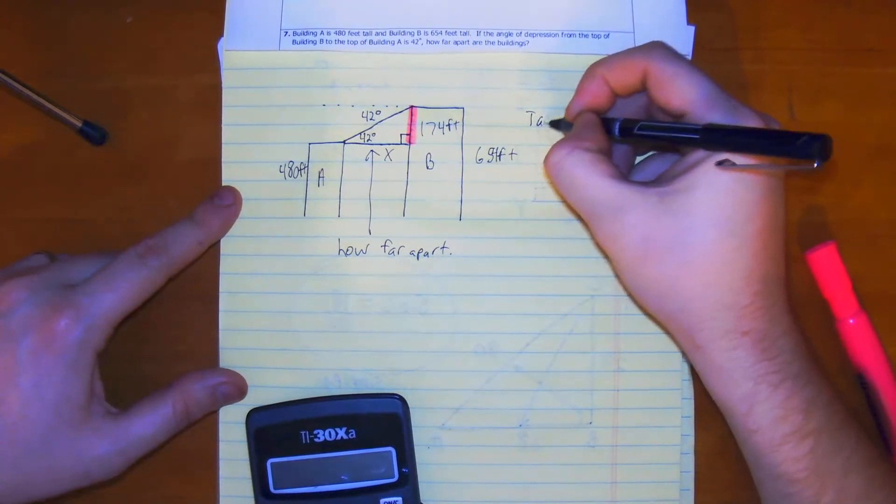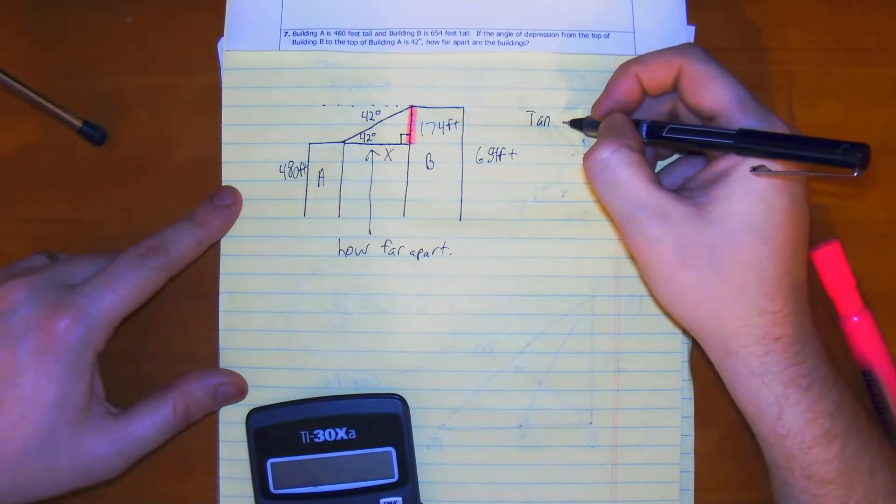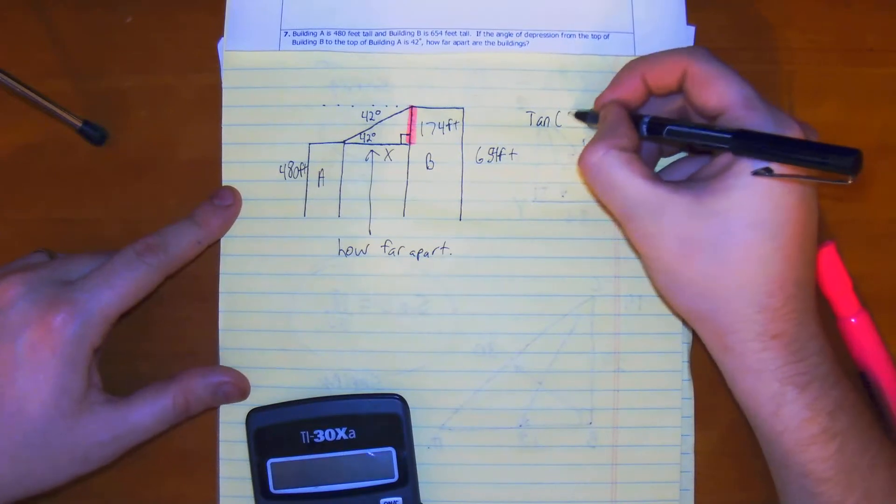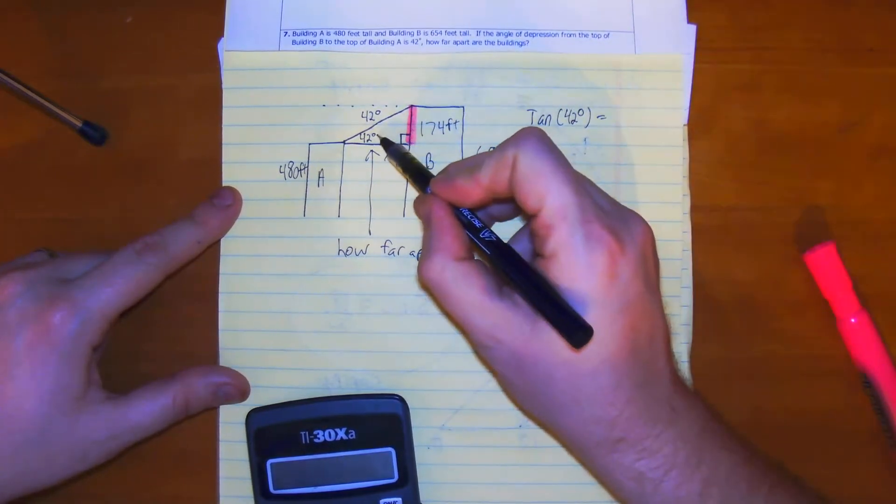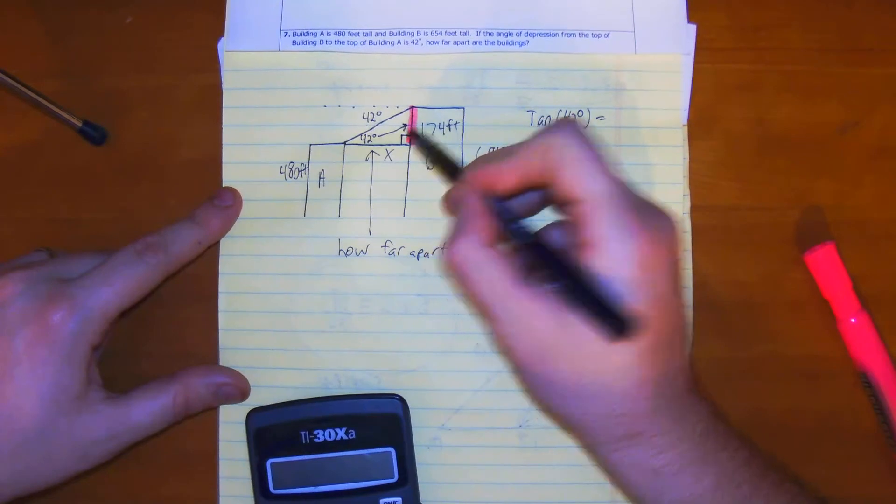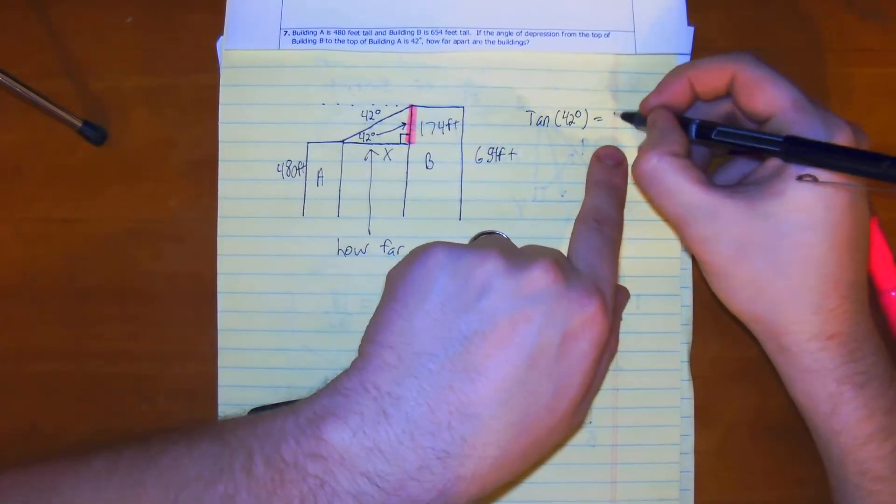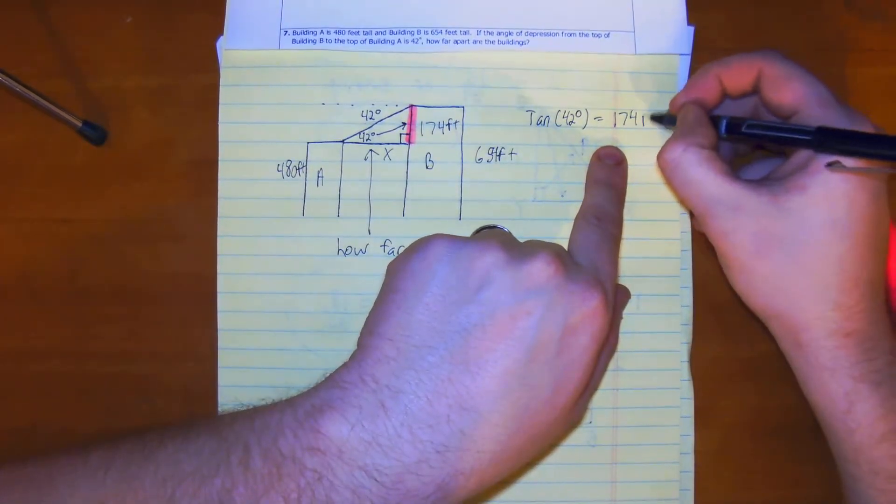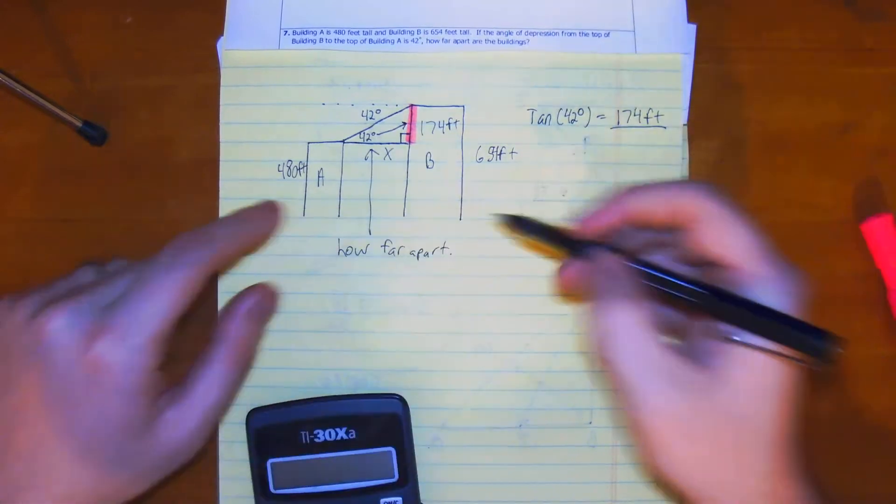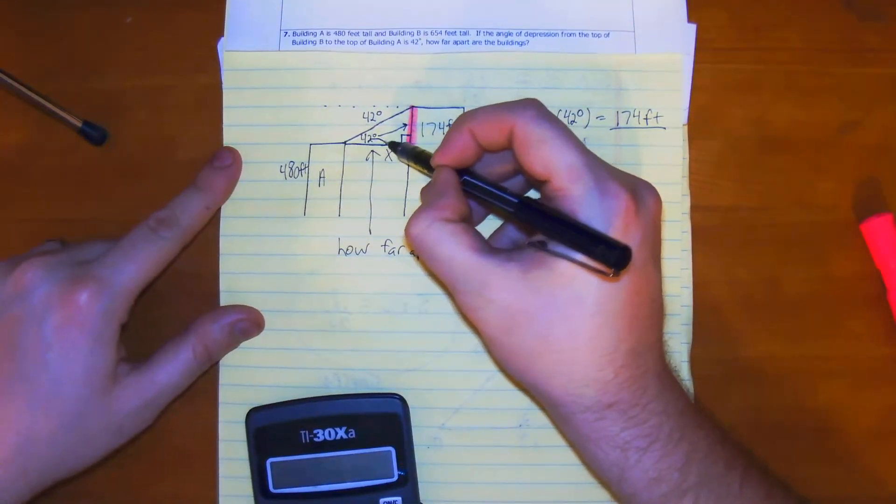So we have tan of 42 degrees equals the opposite side, which is 174 feet, over the adjacent side, x.